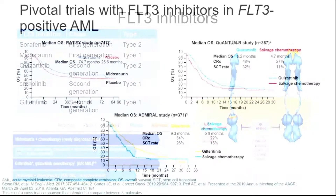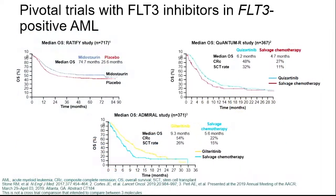Several clinical trials have studied FLT3 inhibitors. The RATIFY trial led to approval of midostaurine in upfront FLT3-positive patients in combination with intensive chemotherapy, with clear survival benefit. The Admiral trial — which we'll discuss in detail — led to approval of giltretinib for relapsed refractory FLT3-positive AML. Quantum-R compared quizartinib versus intensive chemotherapy for relapsed refractory FLT3 ITD, showing survival benefit, but for some reason did not lead to FDA approval — though it is approved in Japan. The Quantum-First trial now shows benefit of quizartinib with 7+3, and we expect it will lead to approval of quizartinib in upfront AML.